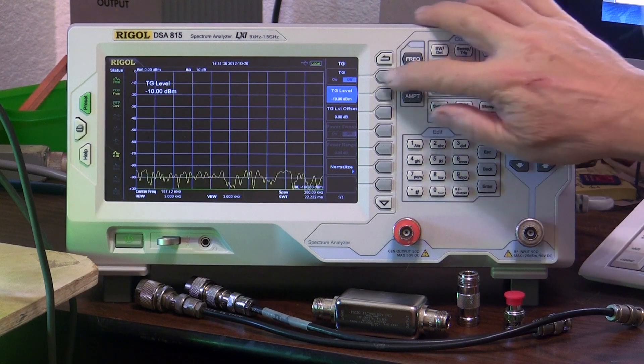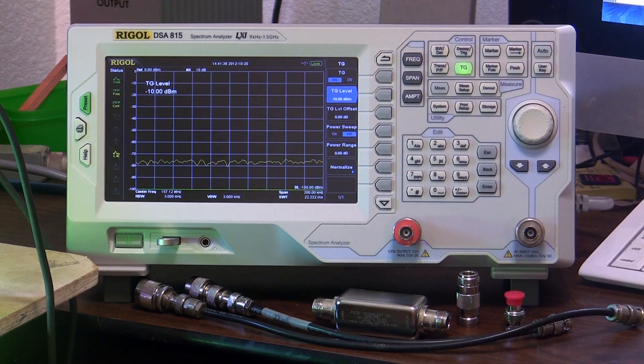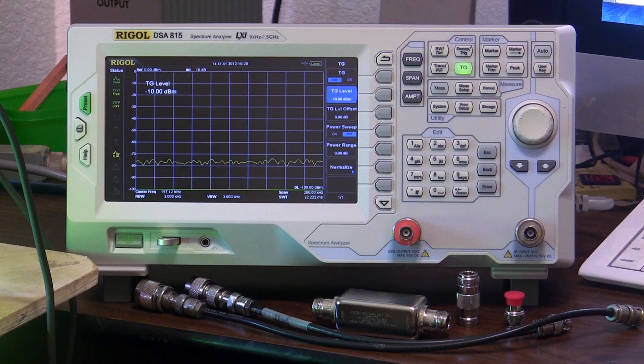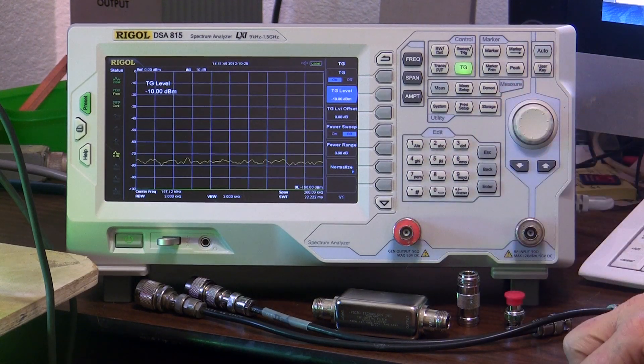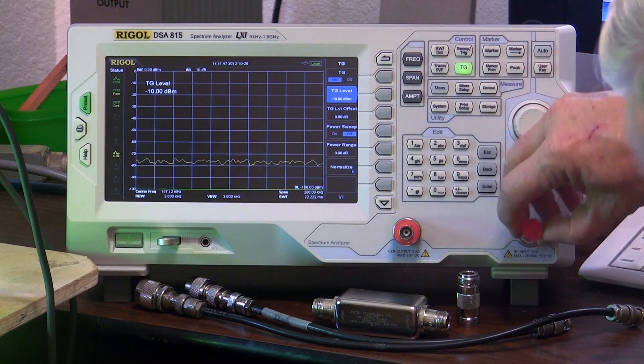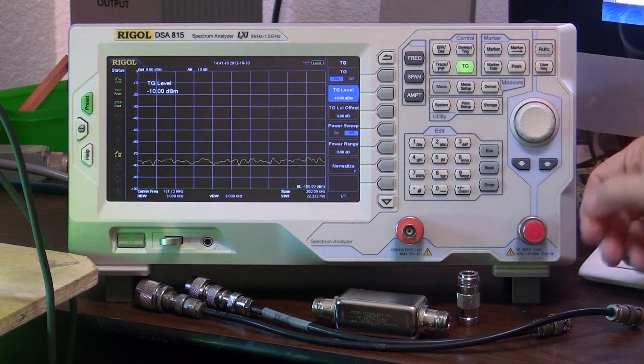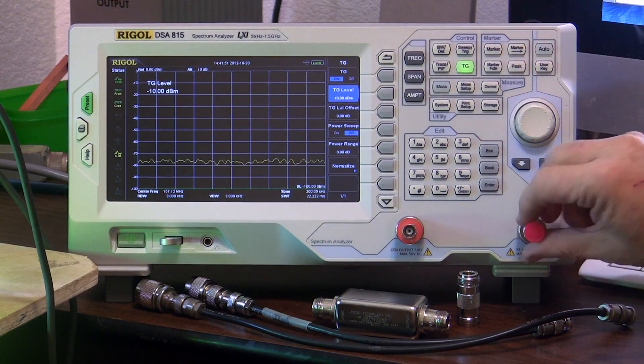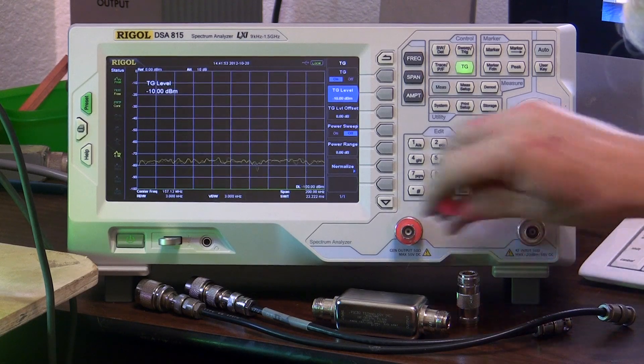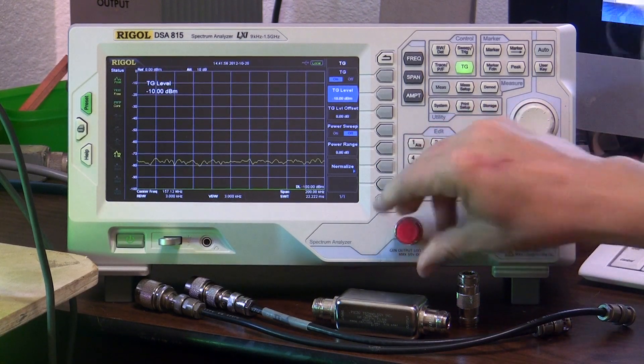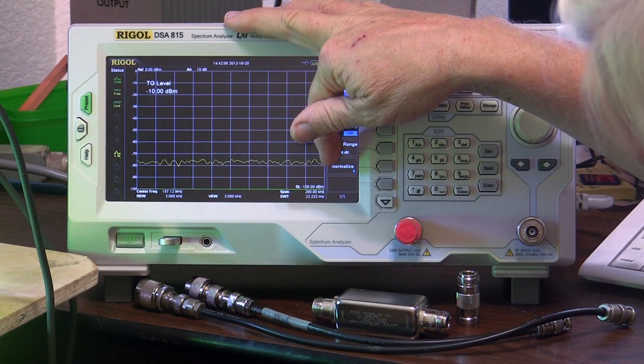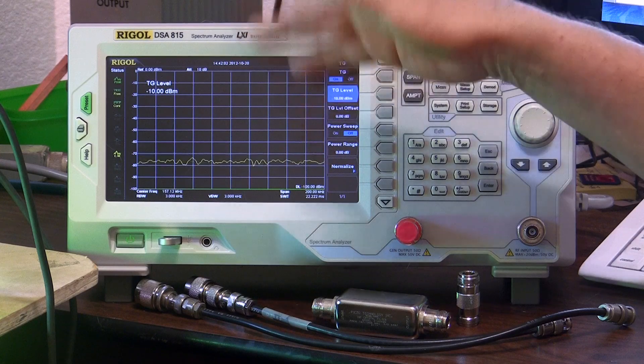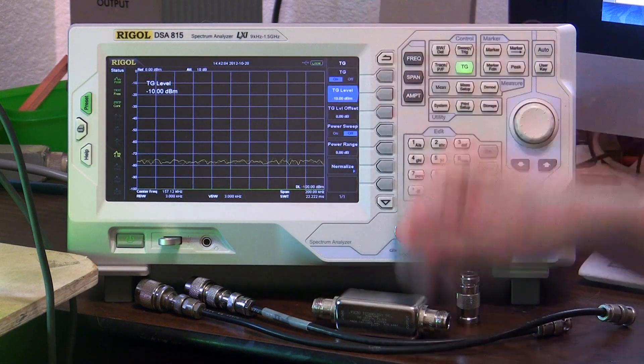So the tracking generator is now on. We have some leakage getting across. Nothing's attached here or here. I can even put a load on here and it doesn't make any difference. I can put a load on here. So that's internal leakage, but it's at minus 78 dBm. So for the moment we'll ignore that.